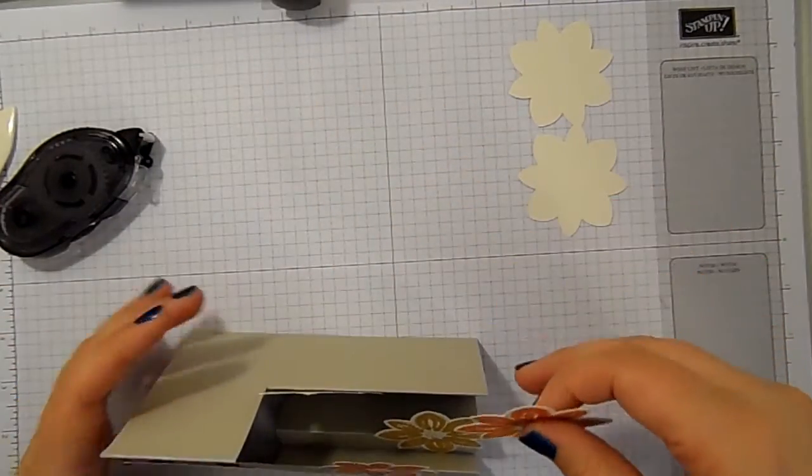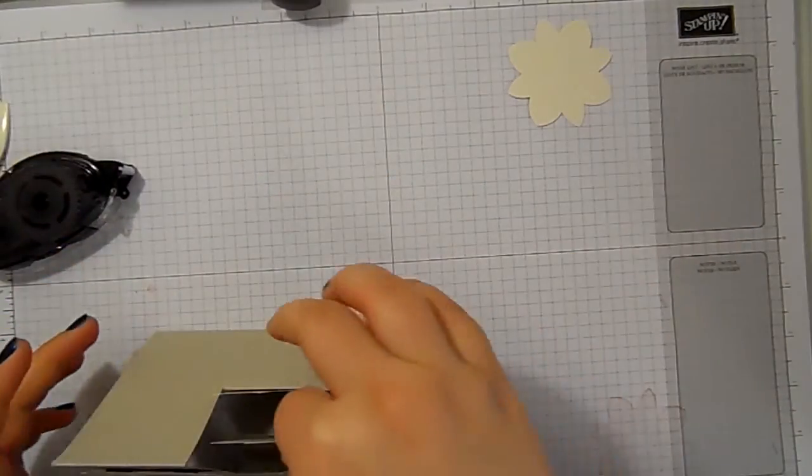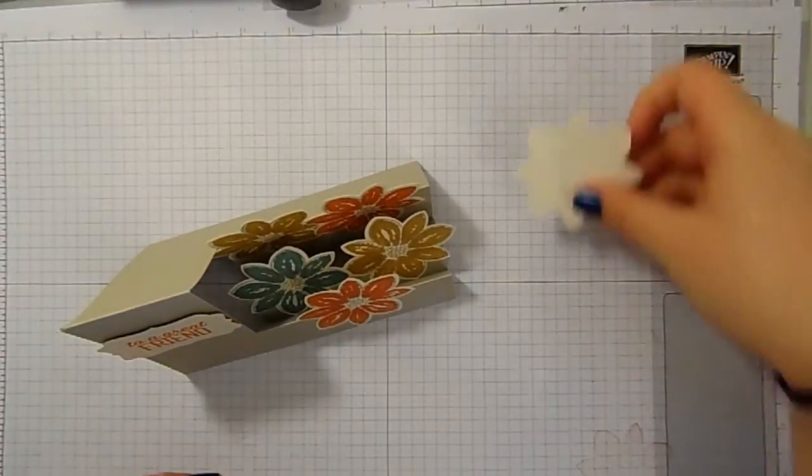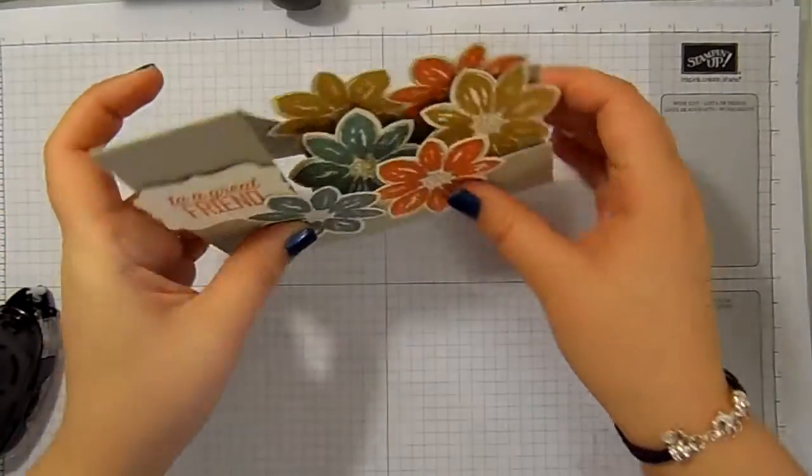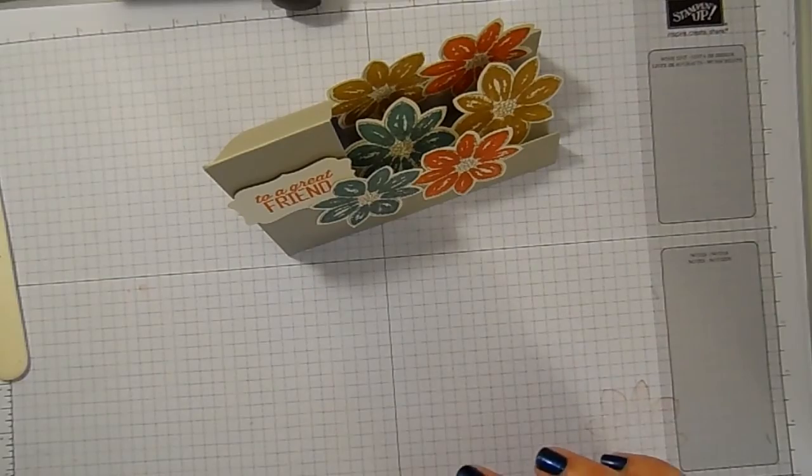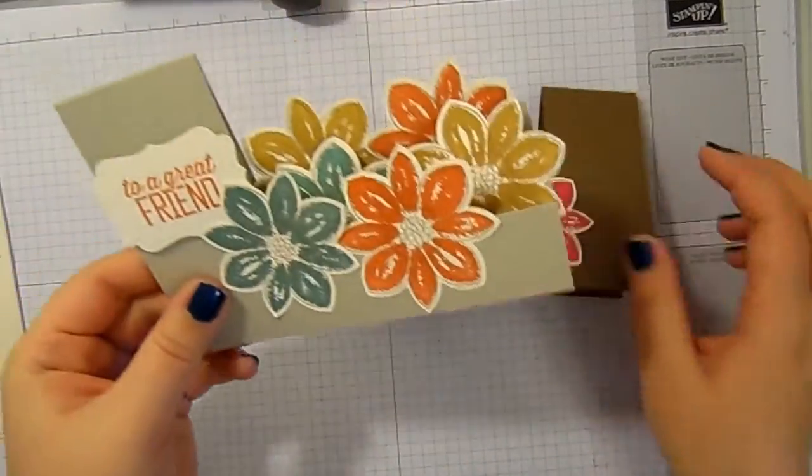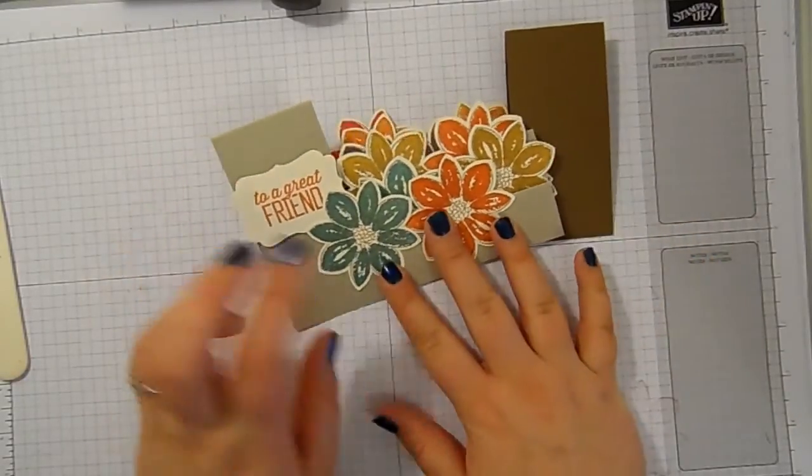And this bit is really quick. Just like that. And that is my sidestepper card using Petal Potpourri. Thanks for watching. Bye for now.